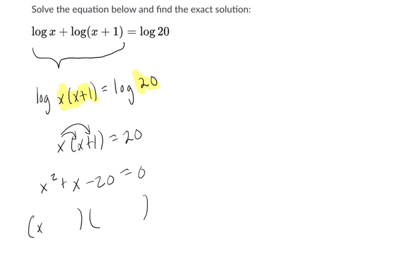Factors that multiply to negative 20 but add to positive one are plus five and minus four. So x could be negative five or x could be four.